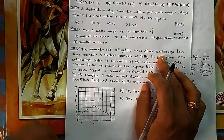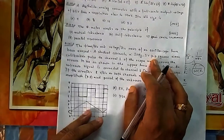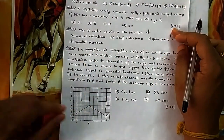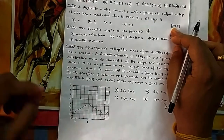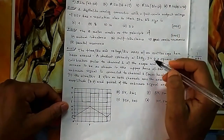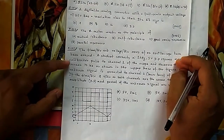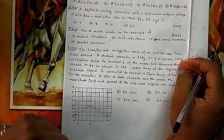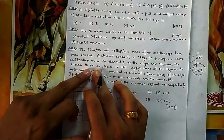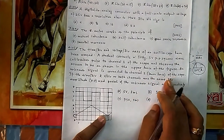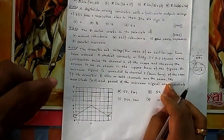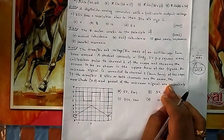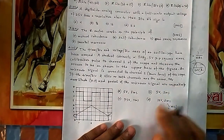Question 105: The time/div and voltage/div markings of an old oscilloscope have been erased. A student connects a 1 kHz, 5 V peak-to-peak square wave calibration pulse to channel 1 and observes it on the upper trace. An unknown signal is connected to channel 2. The time/div and voltage/div settings are the same for both channels.